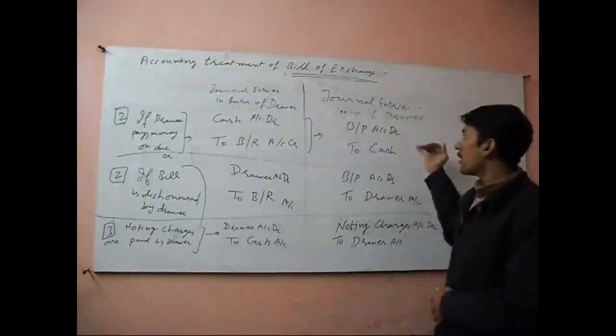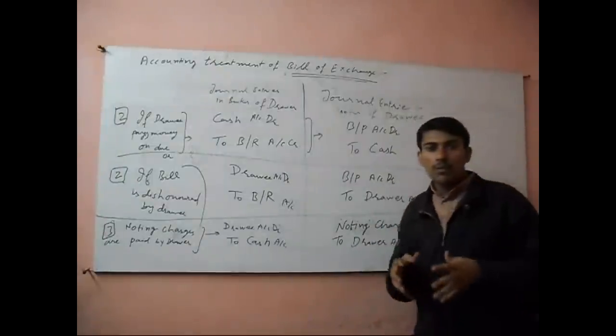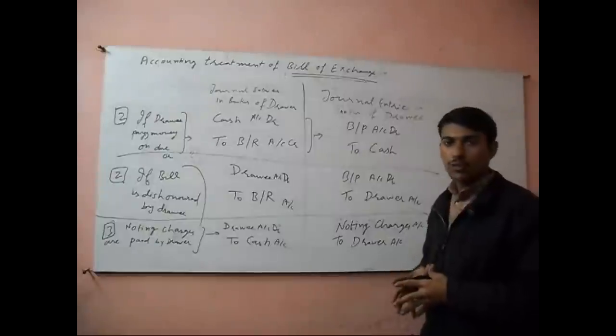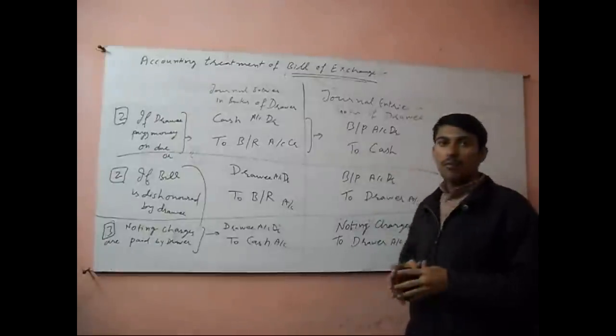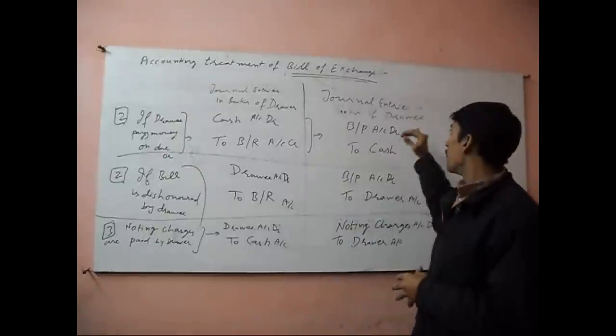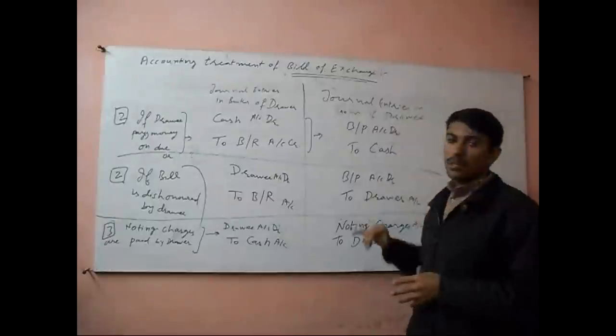And in the books of Drawee, bill payable account debit to cash account, means what goes out from Drawee is cash.